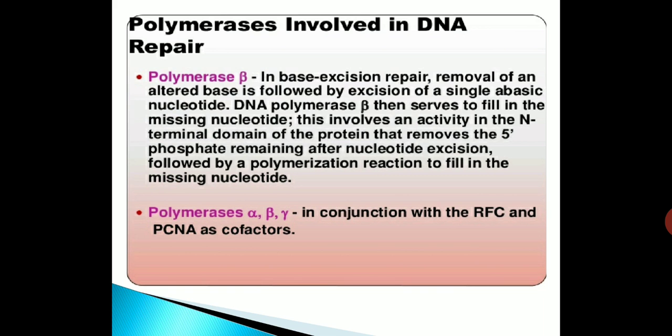Polymerases involved in DNA repair include polymerase beta. In base excision repair, removal of an altered base is followed by excision of a single AP (apurinic/apyrimidinic) nucleotide. DNA polymerase beta then serves to fill in the missing nucleotide. This involves an activity in the N-terminal domain of the protein that removes the 5-prime phosphate remaining after nucleotide excision, followed by a polymerization reaction to fill in the missing nucleotide.